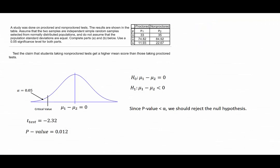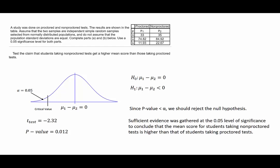Since the p-value is less than alpha, we should reject the null hypothesis. Our conclusion would be sufficient evidence was gathered at the 0.05 level of significance to conclude that the mean score for students taking non-proctored tests is higher than that of students taking proctored tests.